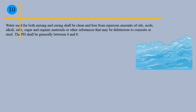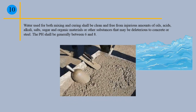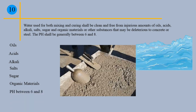Point 10: Water used for both mixing and curing shall be clean and free from injurious amounts of oils, acids, alkali, salts, sugar, and organic materials or other substances that may be deleterious to concrete or steel. The pH shall be generally between 6 and 8.